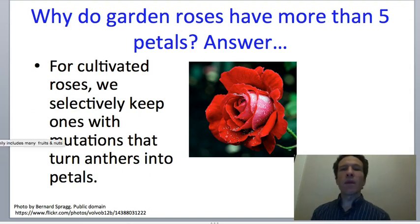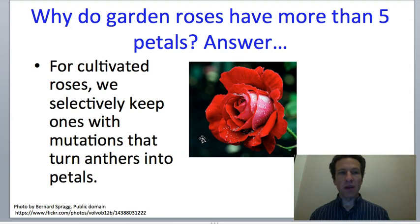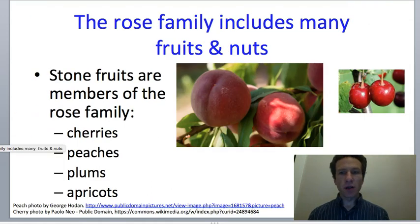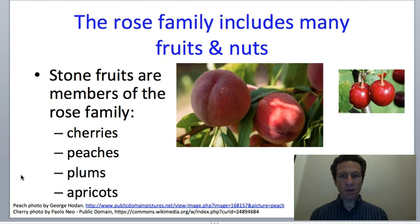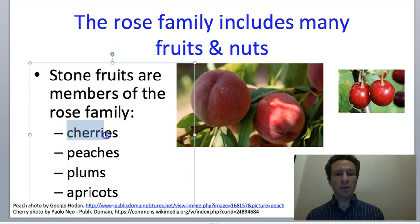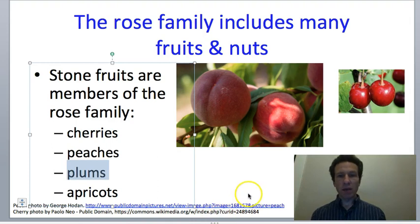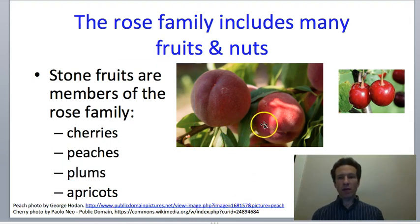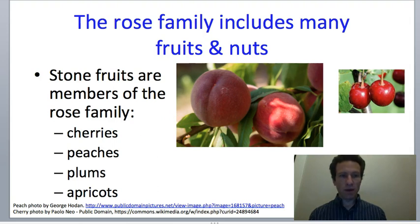The rose genus Rosa is of course a member, but there are many other members too—we've already seen that strawberry is one. All of the stone fruits are also members of the rose family. That includes cherries, peaches, plums, and apricots—all those fruits that have lots of flesh and then one hard seed in the center. There are only a couple of exceptions to that pattern.